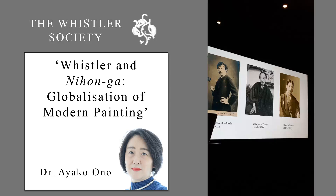Photography arrived at the very end of the Edo period, the 1850s to 60s. Ueno Hikoma was the first photographer. The technique of photography came from the States. There are several ways of getting those art techniques. Because that might be a completely different chapter — Whistler, Japan and photography. The interconnections are fascinating.